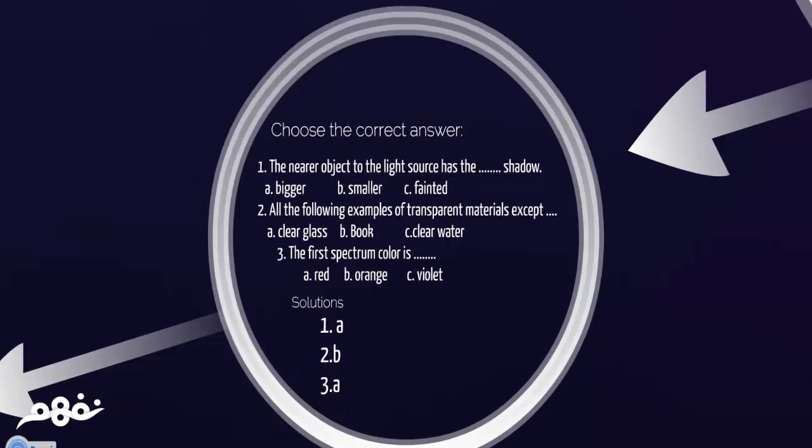Choose the correct answer. The nearer object to the light source has the bigger, smaller, or fainted shadow. Of course, it's the bigger shadow. The nearer the object from the light bulb, as we mentioned before, the bigger the shadow will be. Number two, all the following examples of transparent materials except: we have here clear glass, book, clear water. Clear glass reflects light. Clear water reflects light. However, book does not reflect light. So, the answer will be book. Number three, the first spectrum color is, that's easy, it's red.